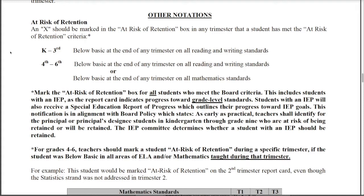One thing I want to talk to you about is the criteria for a student being at risk of retention. The Riverside Unified School District Board has adopted a policy that identifies what it means to be at risk of retention. For students in grades kindergarten through third, that would be any student who is below basic at the end of any trimester on all reading and writing standards.